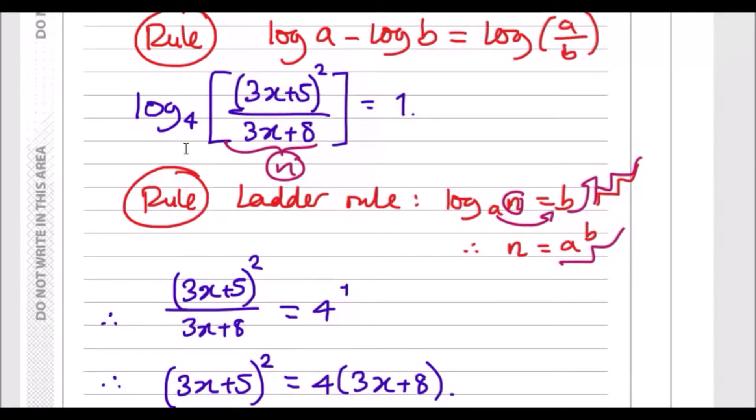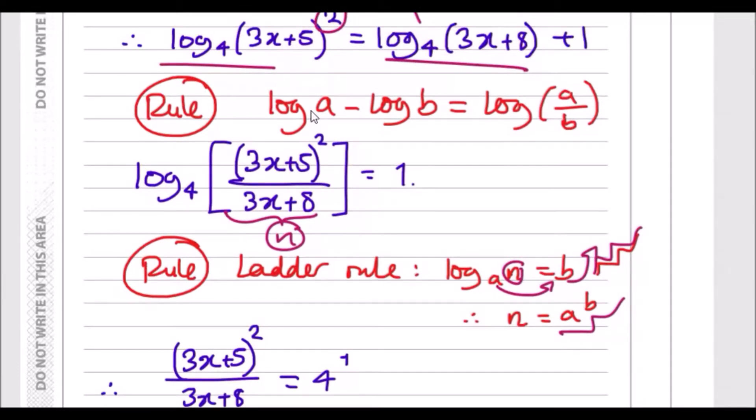And of course the general log rule: log a minus or plus b. If you had to add them up, this is the same as multiplying, so it'd be log(a times b).